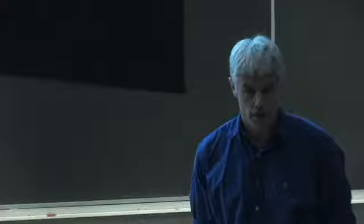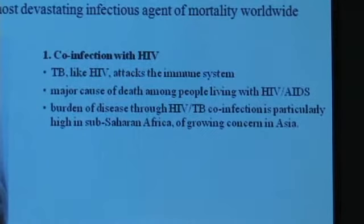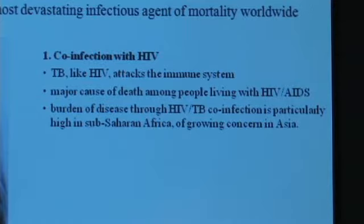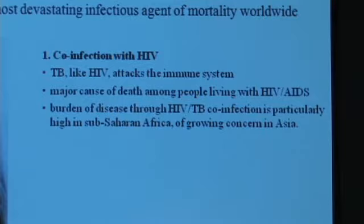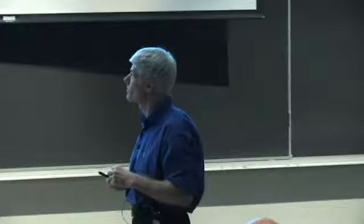Why is this? Basically, for two main reasons. The first is due to co-infection with HIV. TB, like HIV, attacks the immune system—the very system that we've evolved to take out foreign invaders. It's a major cause of death of people living with HIV/AIDS. This burden of co-infection works almost synergistically to devastating effect, and this is most apparent in sub-Saharan Africa and a growing concern in Asia as well.